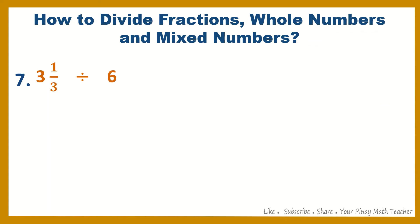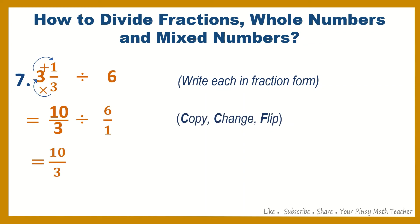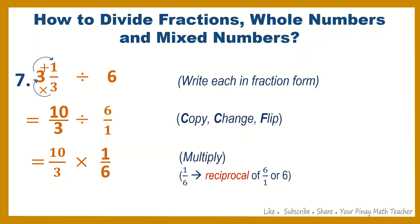Number 7: 3 and 1 third divided by 6. Writing them in fraction form, 3 and 1 third becomes 10 thirds, divided by 6 over 1. After that, copy 10 thirds, change division to multiplication, and 6 over 1 becomes 1 sixth, which is the reciprocal of 6. Since 10 and 6 can be reduced by 2, 10 becomes 5 and 6 becomes 3. So 5 times 1 is 5, and 3 times 3 is 9 — the final answer is 5 ninths.